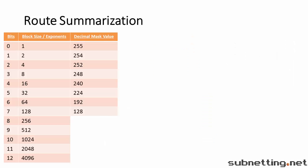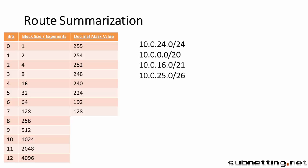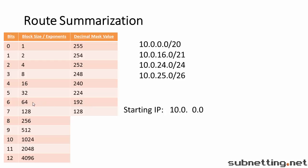Let's try another example. Suppose you are asked to summarize the following networks. First let's order them by starting IP. Now let's write down the starting and ending IPs. The starting IP is the beginning of the first network, which is 10.0.0.0. For the ending IP, we look at slash 26 and find the block size, which is 64. That means the beginning of the next network is 25.64. So the ending IP address is one less than that, which is 25.63.